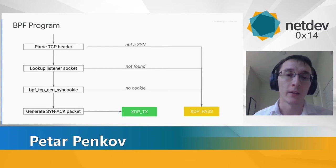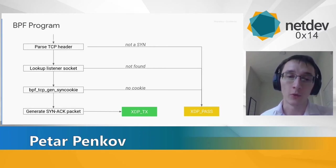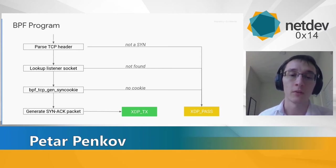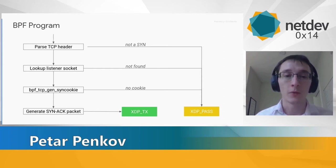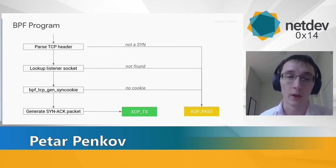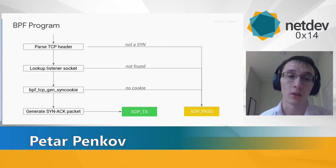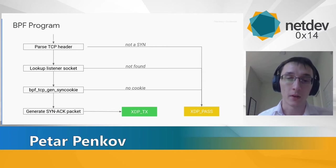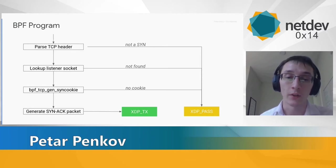The BPF program tries to punt to the kernel as much as possible. First, we parse the TCP packet — if it's not TCP or not a SYN packet, the kernel handles it. If we cannot find the socket corresponding to the packet, or if the socket is not in the correct state, we pass it to the kernel. If we find the socket, we try to issue a SYN cookie; if we cannot, we let the kernel handle it, since the SYN queue may not be full.